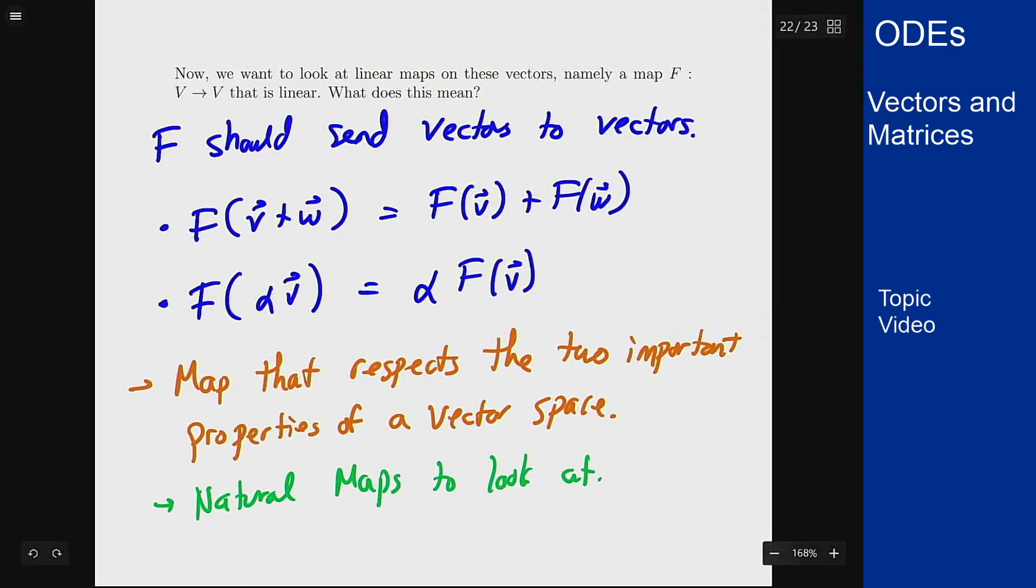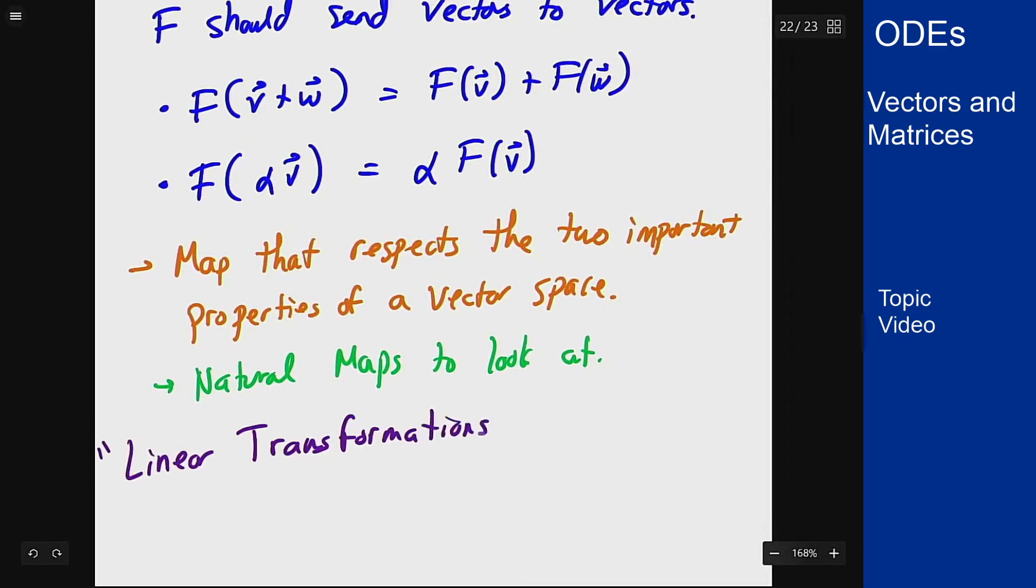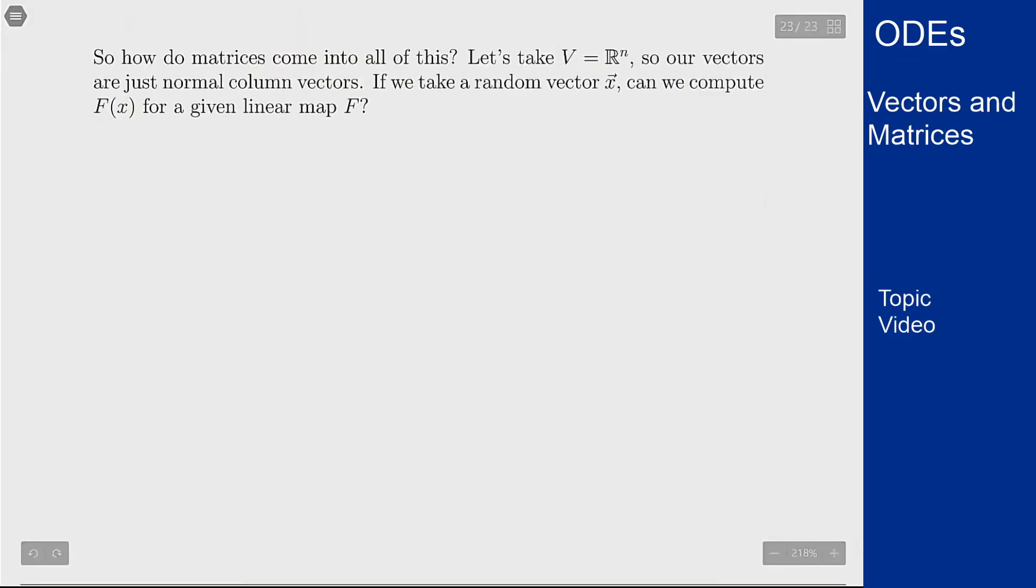Based on this, these are the natural maps to look at on vector spaces because they respect the two main important properties. You'll hear these called linear transformations or linear maps on a vector space. That's great and all, but what about matrices? How do they pop into this picture?